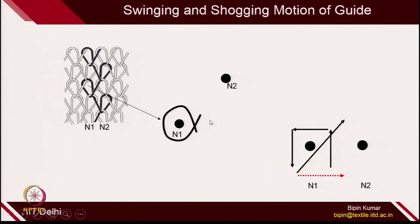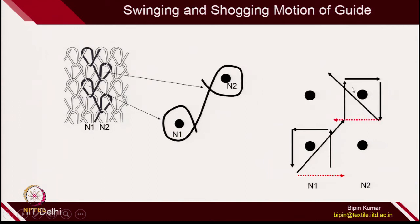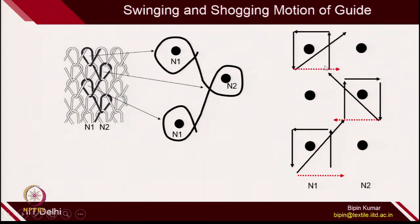After that, the guide moves to N2 and again makes the loop — again swinging, sogging, swinging, sogging. In the third course, it is making a loop again on N1 — again you need to describe swinging, sogging, swinging, sogging.